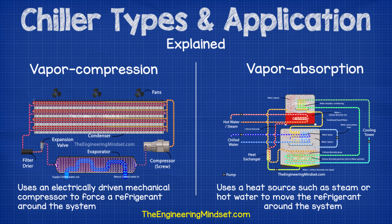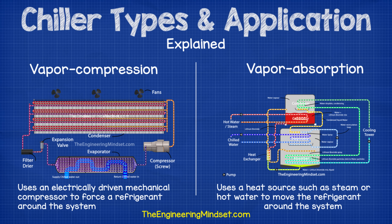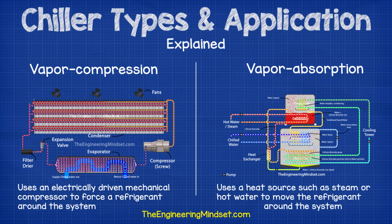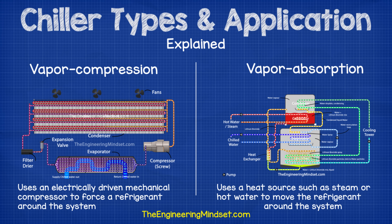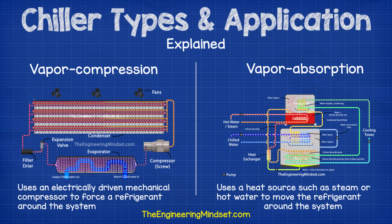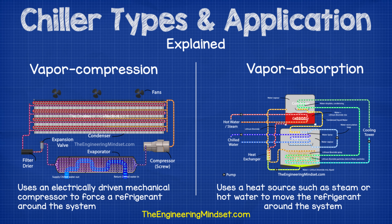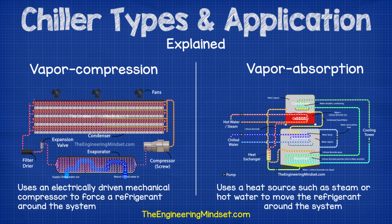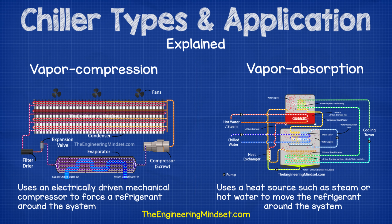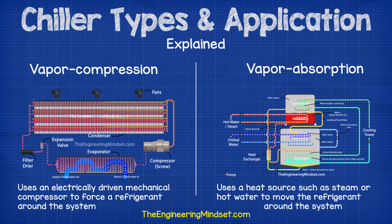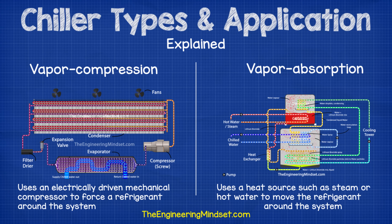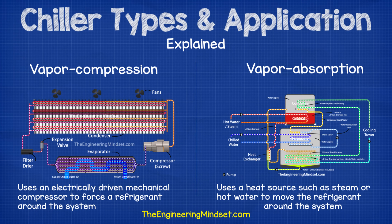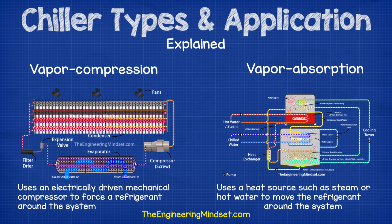The first way to categorize a chiller is by defining whether it is a vapor compression or a vapor absorption type chiller. Vapor compression chillers use an electrically driven mechanical compressor to force the refrigerant around the system. These are the most common type. The other main category is the vapor absorption type, which instead of using an electrically powered mechanical compressor, uses heat to move the refrigerant around the system.